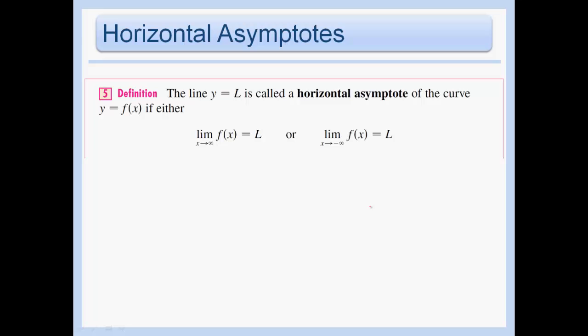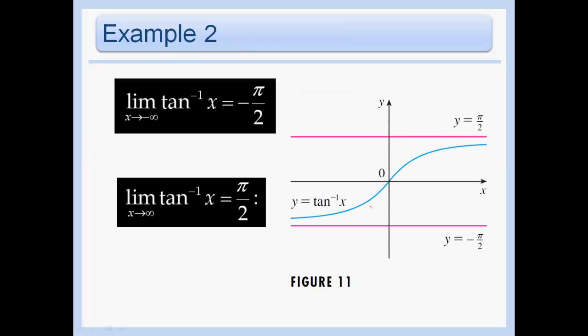So when we have a limit as x approaches infinity, or as x approaches negative infinity, equaling some L, we can say we have a horizontal asymptote at y = L. Let's look at the arctan graph — that's just the tangent graph flipped on its side. We have horizontal asymptotes at π/2 and −π/2. The left-end behavior is not the same as the right-end behavior, but we still have horizontal asymptotes at both places.